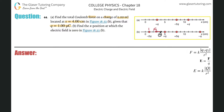We'll call that F1. Now let's take a look at the next one. This is positive — we'll call that charge two — and that is then a repulsive force, so it's pointing to the left as well. So F2 is over here. Let's call this now number three. This is positive as well, so they're repulsive — that's also going to be pointing to the left. That's F3.